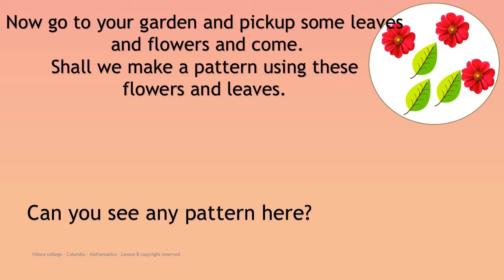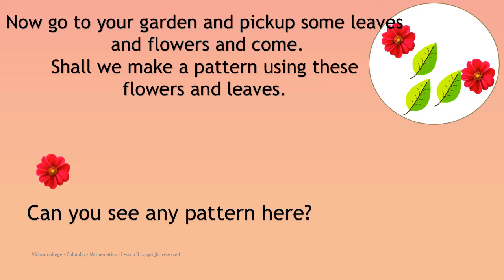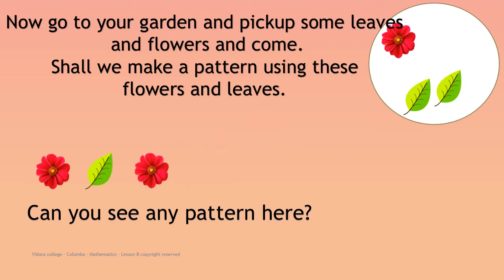Before you do the next example, go to your home garden and pick up some flowers and leaves. We will keep them in a pattern — you can do it with me. Let's start. First keep a flower in a line, next keep a leaf, again keep a flower. What comes next, children — a leaf or a flower? Yes, a leaf. Please continue the pattern using all your leaves and flowers.